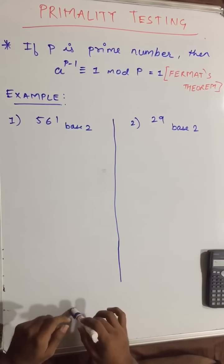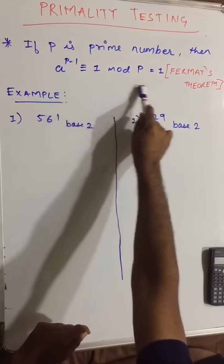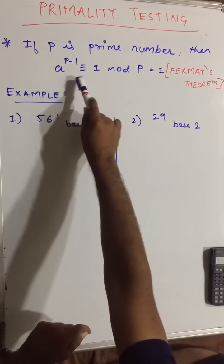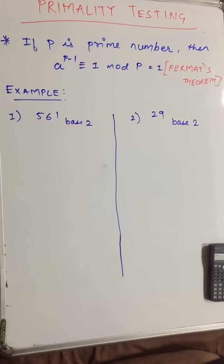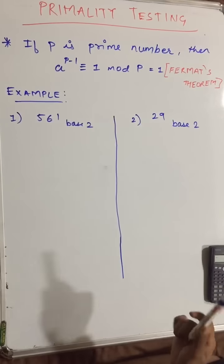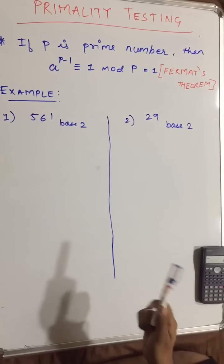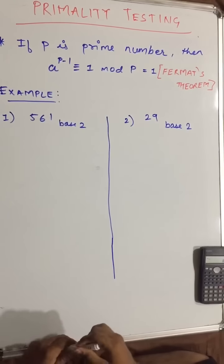In primality testing, we all know that Fermat's theorem is a raised to p minus 1 congruent to 1 mod p, which I have taught you in lecture number 6. So if you have forgotten, go and watch it once again to clear your fundamentals.